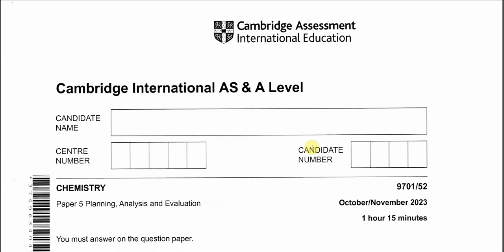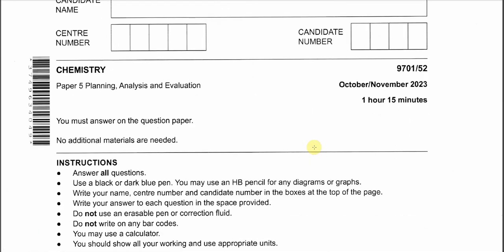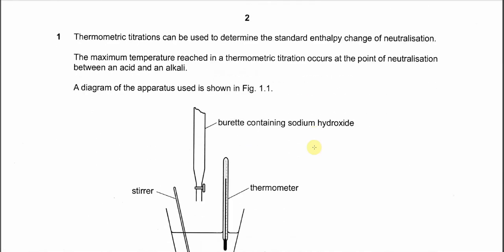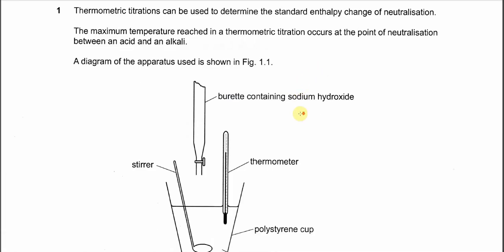October November 2023 Paper 5 Variant 2, Question 1. This question is about the enthalpy change of neutralization reactions between sodium hydroxide and hydrochloric acid, and this is the titration between them.